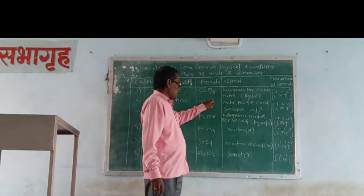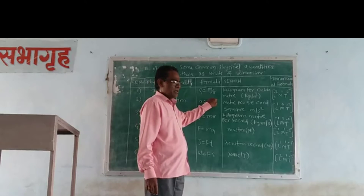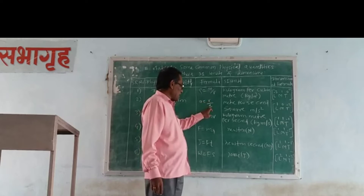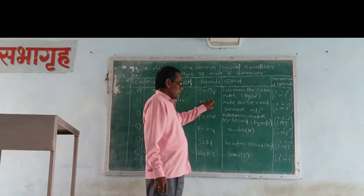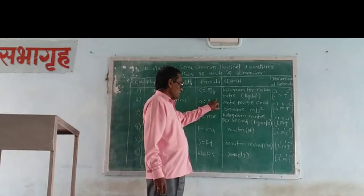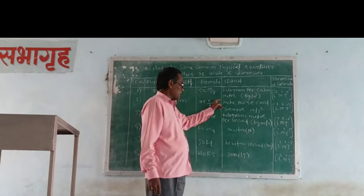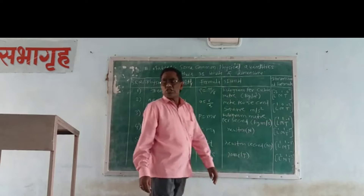Displacement or distance is L divided by T. L divided by T, divided by T, gives L to the power 1, T to the power minus 1, then L1 M0 T to the power minus 2.